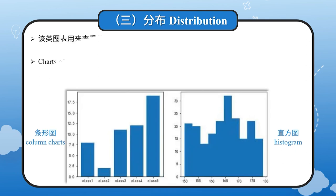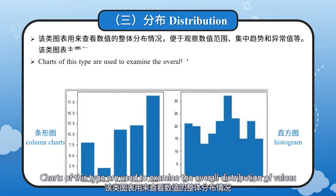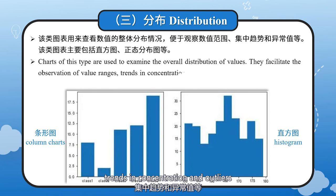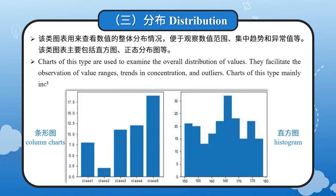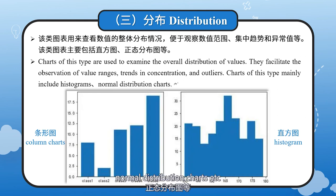Distribution: Charts of this type are used to examine the overall distribution of values. They facilitate the observation of value ranges, trends in concentration, and outliers. Charts of this type may include histograms, normal distribution charts, etc.